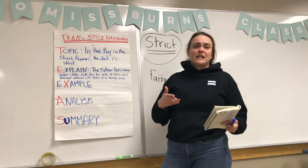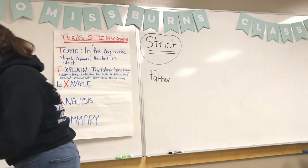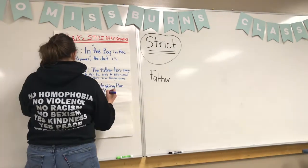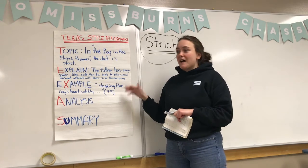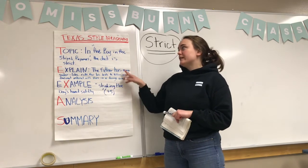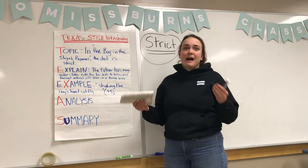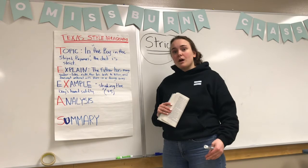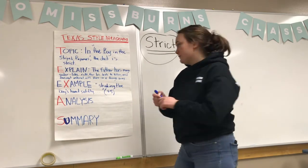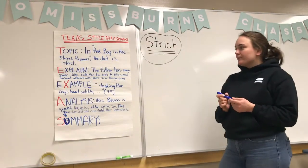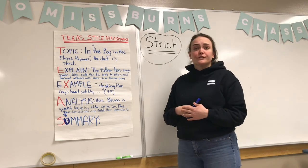I might even talk more in depth about Chapter Five and the title 'Out of Bounds at All Times, No Expectations.' After giving my example — 'shaking the boy's hand solidly' — I need to explain why this quote really connects to the dad being strict. It might seem obvious that a handshake is very formal, but I need to explain that to the reader of my essay so they completely see my thought process. That's where the analysis comes in. In my analysis I write: 'Here, Bruno is greeted like he is a soldier, not his son. This shows how cold and rule-filled their relationship is.'